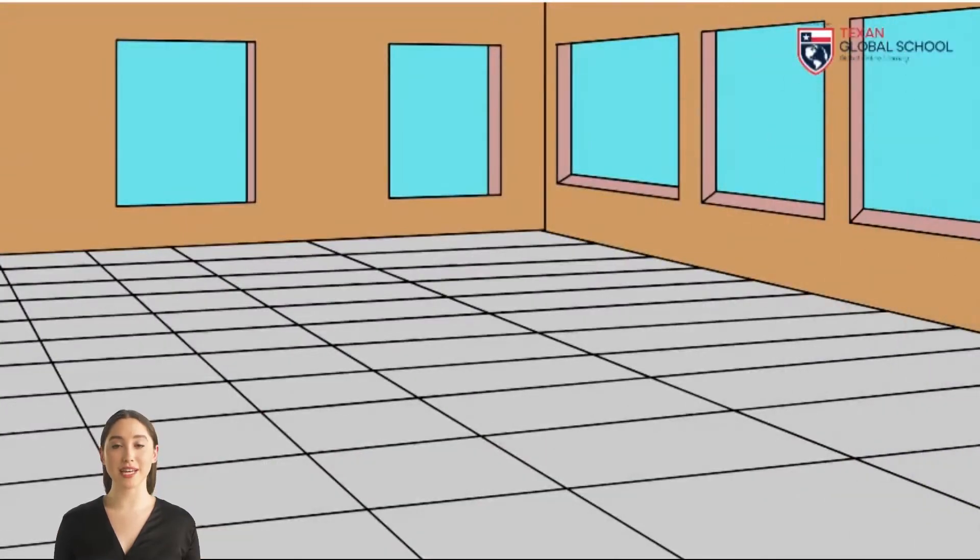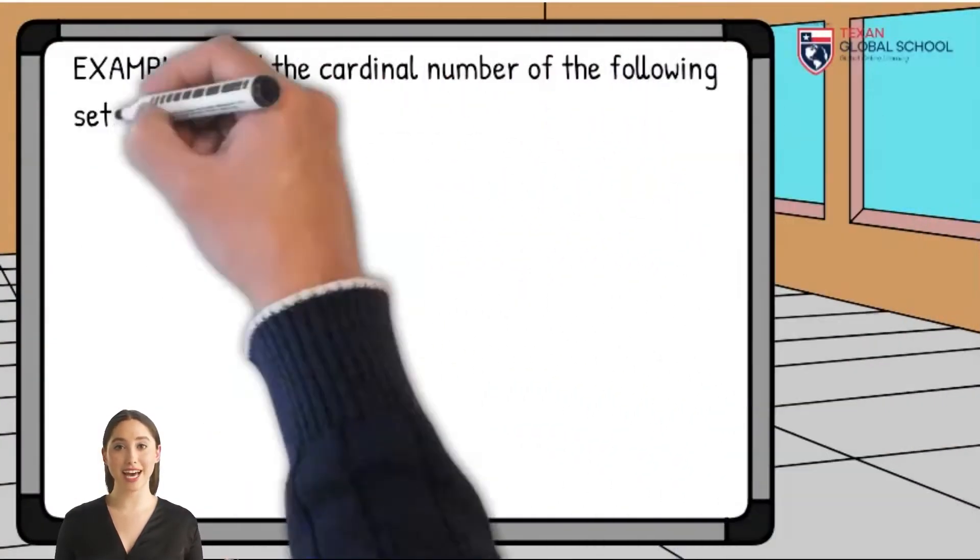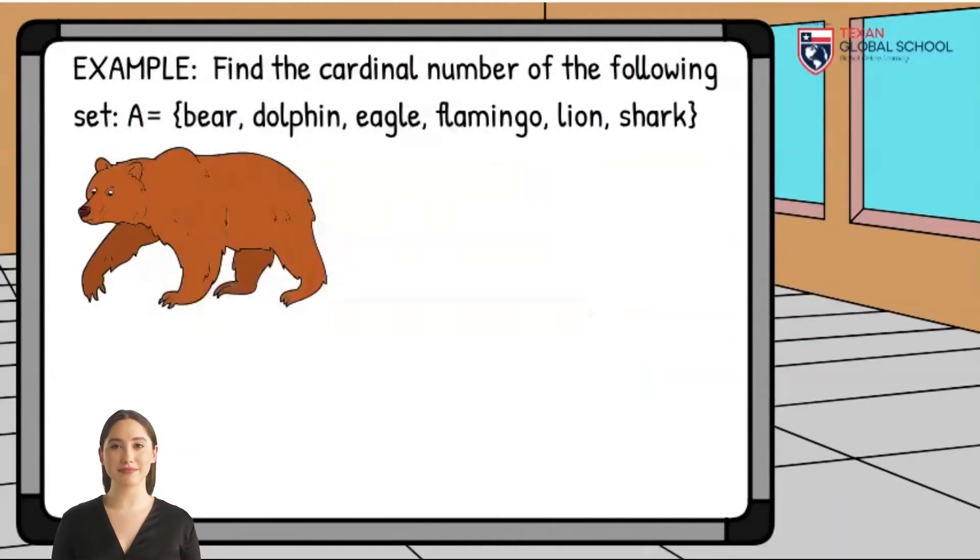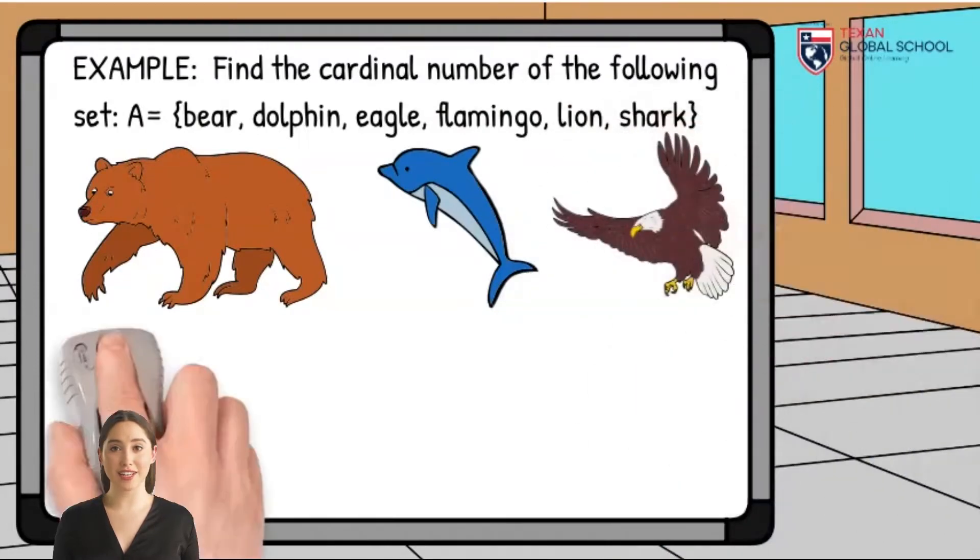Let's look at the following example. We have to find the cardinal number of the next set, A. Its elements contain some animals such as bear, dolphin, eagle, flamingo, lion, and shark.